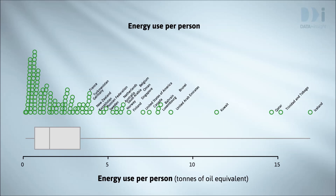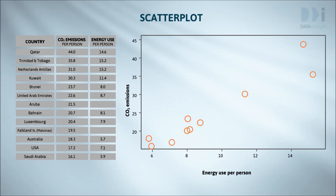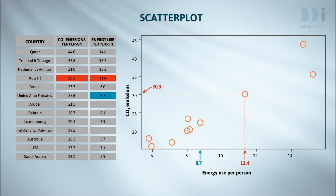Energy use and CO2 emissions are both numeric variables, and the standard tool for looking at a relationship between two numeric variables is a scatter plot. Here we have a scatter plot of per person CO2 emissions against energy use for the countries heading our CO2 emissions list. This plot has a scale for CO2 emissions running vertically, and a scale for energy use running horizontally. We plot each pair of points against these two scales, as shown using the values for Kuwait in red and the United Arab Emirates in blue.